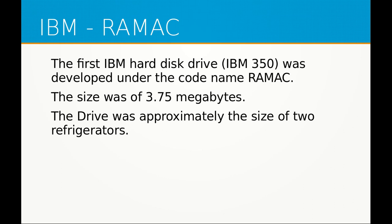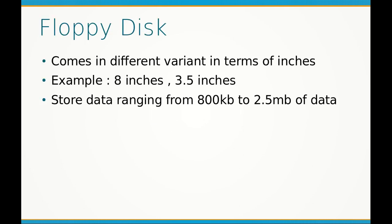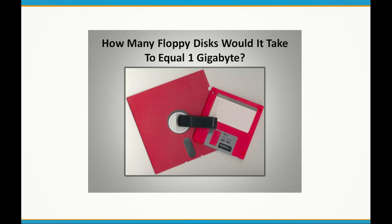Later came the evolution of the floppy disk, which most of you know about. It was a square-shaped data storage device that came in different variants in terms of inches — for example, 8 inches, 3.5 inches, and 5.5 inches. The storage capacity of a floppy disk ranged from 800 KB to 2.5 MB.